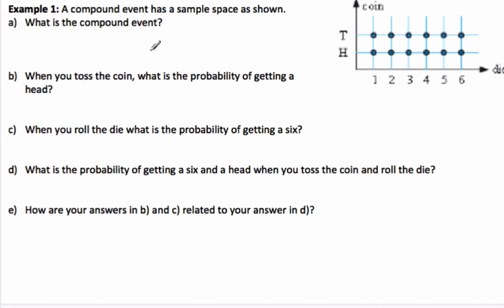Here's an example. A compound event has this specific sample space. Here's my coin toss, here's my die: 1, 2, 3, 4, 5, 6. What is the compound event? Well, it's the flip of the coin and the die roll.